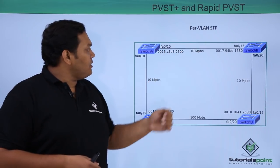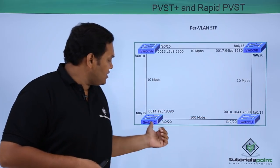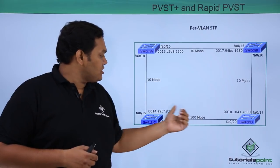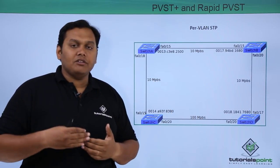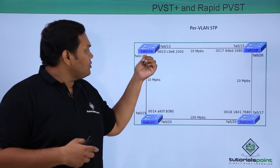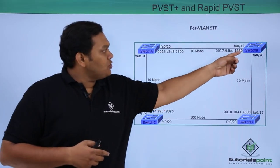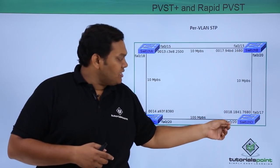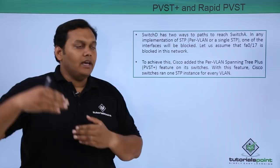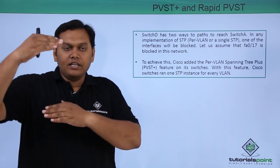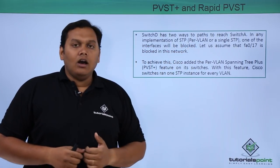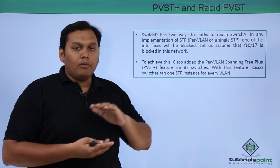In the Per VLAN STP diagram, Switch A, Switch B, Switch C, and Switch D are connected in a network. The MAC addresses of each switch are given, along with two interfaces — the incoming and outgoing interfaces. Switch C has Fast Ethernet 15 and 20, Switch A has 15 and 18, Switch B has 15 and 20, and Switch D has 17 and 20. Switch D has two ways to reach Switch A, through interfaces 17 and 20.